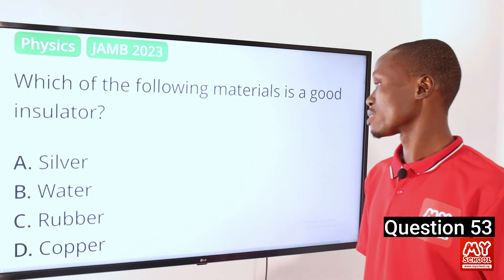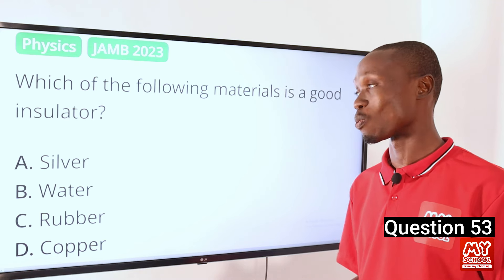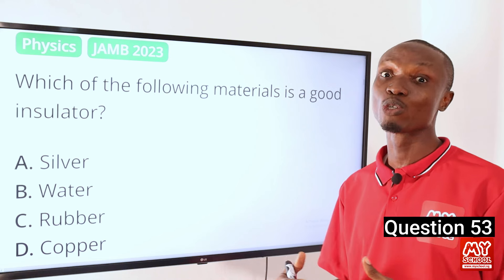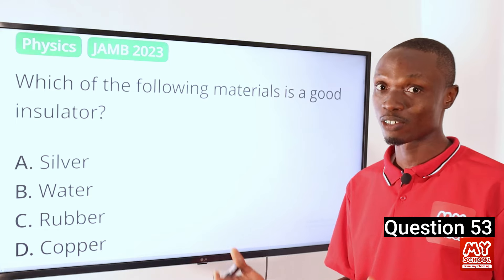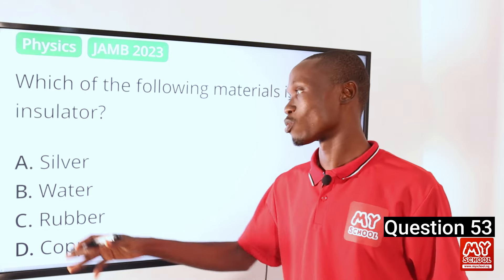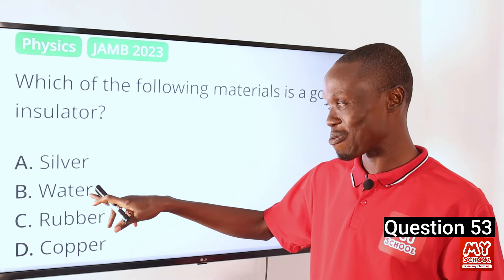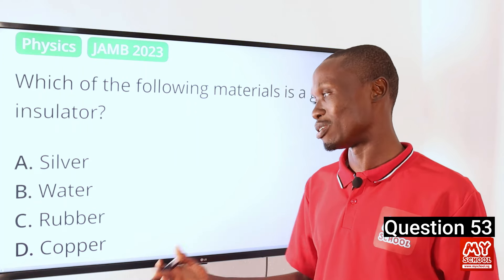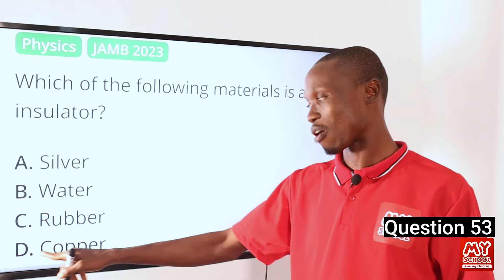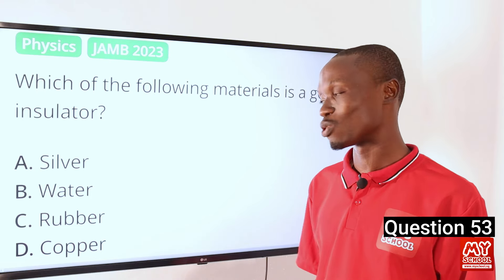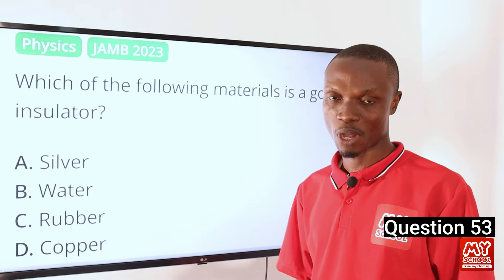Question 53. Which of the following materials is a good insulator? Insulators are substances that do not allow electricity to pass through them, and they are mostly non-metals. Option A, silver, is a metal. Option B, water, is a liquid that allows electricity to pass through it. Option C, rubber, is a non-metal that does not allow electricity to pass through it. Option D, copper, is a metal and conducts electricity. So the correct option is C, rubber.